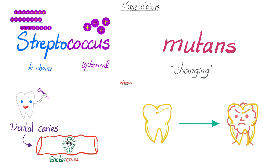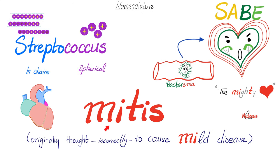Next, Streptococcus mitis — they called it mitis because they thought it only caused mild disease, but that's not true. It can actually cause bacteremia and sub-acute bacterial endocarditis. Just remember: the mighty heart, the mighty mitis, the mighty endocardium, the mighty valve.